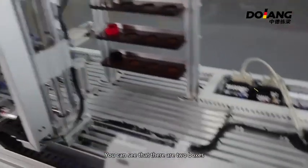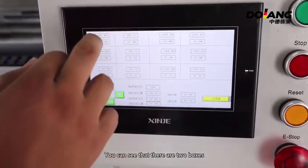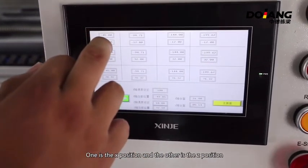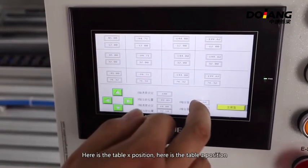You can see that there are two boxes. One is X-position and the other is Z-position. Here is the table X-position. Here is the table Z-position.